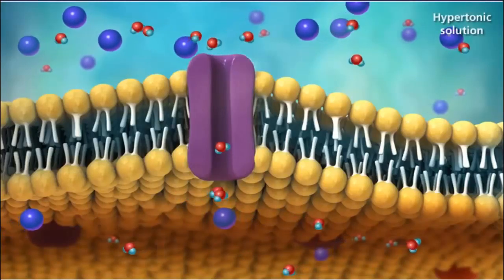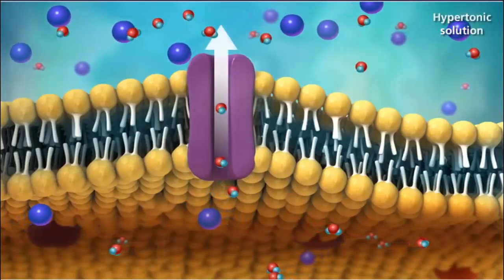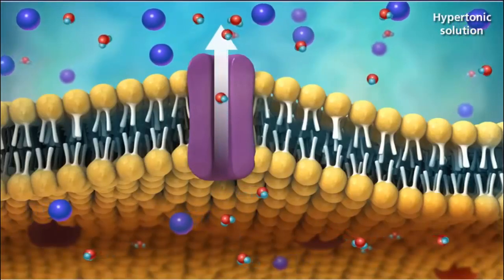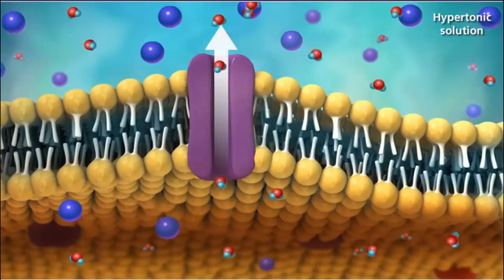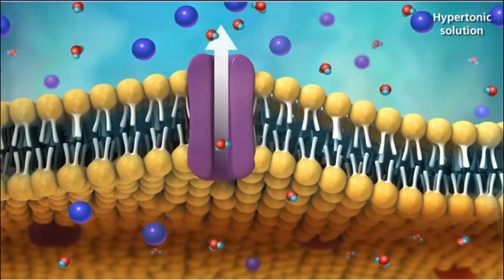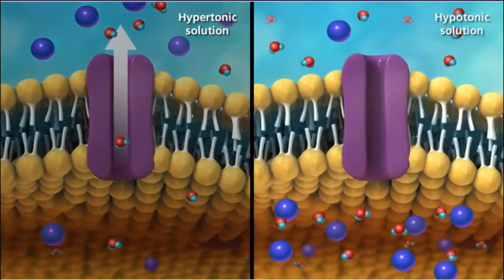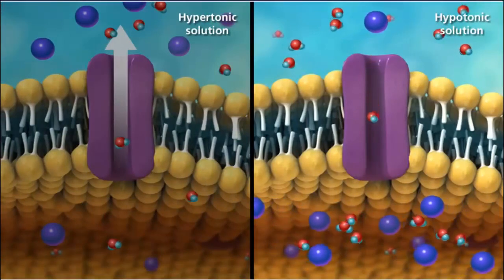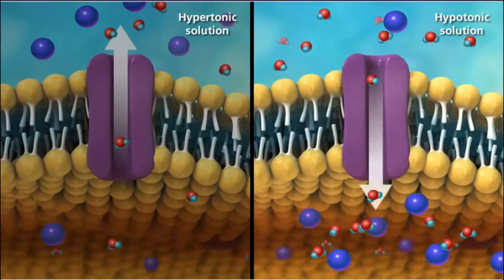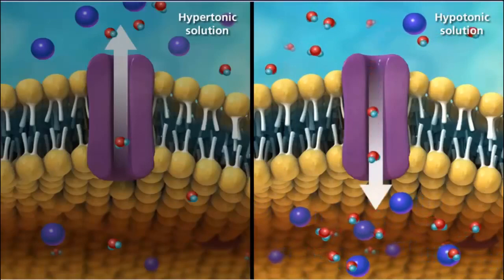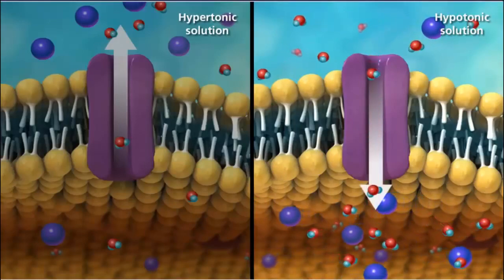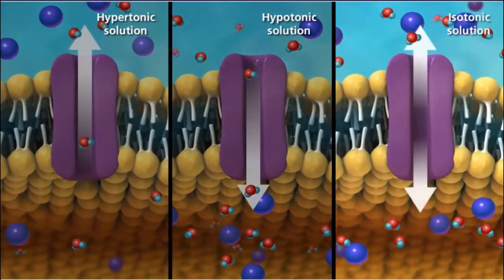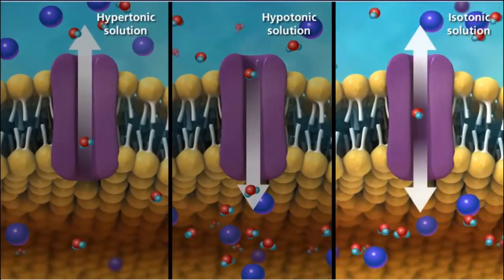A cell in a hypertonic environment will have water move from the inside of the cell toward the higher concentration of solutes in the solution outside the cell. In a hypotonic solution, the concentration of solutes is higher inside the cell than the outside environment, so water will diffuse into the cell. When the solutions on either side of the membrane reach equilibrium, they are referred to as isotonic.